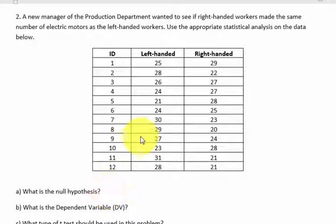So the hypothesis is there's no difference between the number of electric motors built between left-handed or right-handed. Null always states the same thing, no difference.